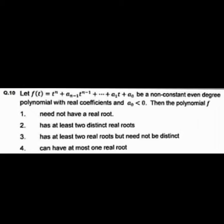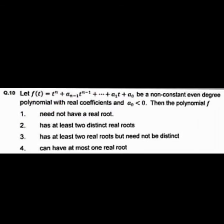So the key idea of this solution is: we treat the polynomial as a characteristic polynomial of an n×n matrix, compare the determinants, and then use the fact that roots of the characteristic polynomial are eigenvalues. This gives us at least two distinct real roots. Therefore, option B is correct.